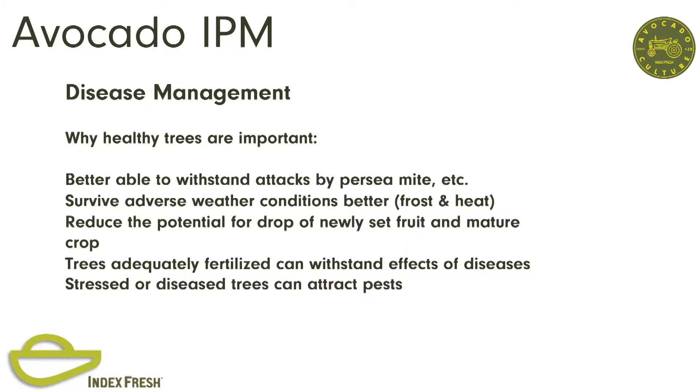The environment: reduce conditions that favor disease. We plant on the mounds, we leach salts, we don't overwater. So why are healthy trees important? We resist the attack by perseamite, survive adverse weather conditions, reduce the potential for fruit drop, better fertilized trees, healthier trees withstand diseases, and stressed trees attract pests. The three major diseases we've got in avocados right now are root rot, crown rot, and branch canker—which used to be called Dothiorella, but the scientists changed the name to Botryosphaeria so that we couldn't spell it again.